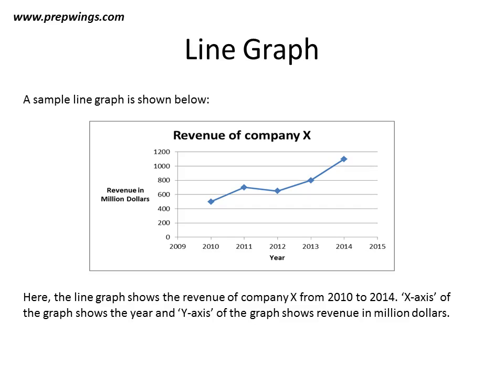To understand this graph, we will take a typical value and try to understand what the value means. For example, we will take the value for 2010. In 2010, the revenue of the company was between 400 and 600 million dollars, and it seems to be exactly in between 400 and 600, so it will be 500 million.